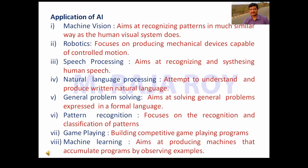Applications of AI: Machine vision — aims at recognizing patterns in much the same way as the human visual system does. Robotics — focuses on producing mechanical devices capable of controlled motion. Speech processing — aims at recognizing and synthesizing human speech. Natural language processing — attempts to understand and produce written natural language. General problem solving — aims at solving general problems expressed in a formal language. Pattern recognition — focuses on the recognition and classification of patterns.